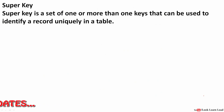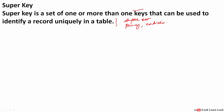The next is the super key. A super key is a set of one or more keys that can be used to identify a record. You can say that the super key is a superset — it is the superset of the primary key, candidate keys, unique key, and alternate key. So whatever keys we have read so far, the super key is the superset of all those keys.